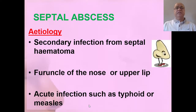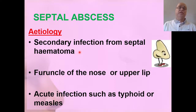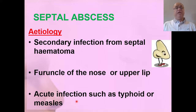Septal abscess is an infected collection of pus in the same plane — between the mucoperichondrium and the underlying cartilage. It can be secondary infection from an untreated septal hematoma, or secondary to a furuncle of the nose or upper lip, or acute infections such as typhoid or measles can also lead to septal abscess.